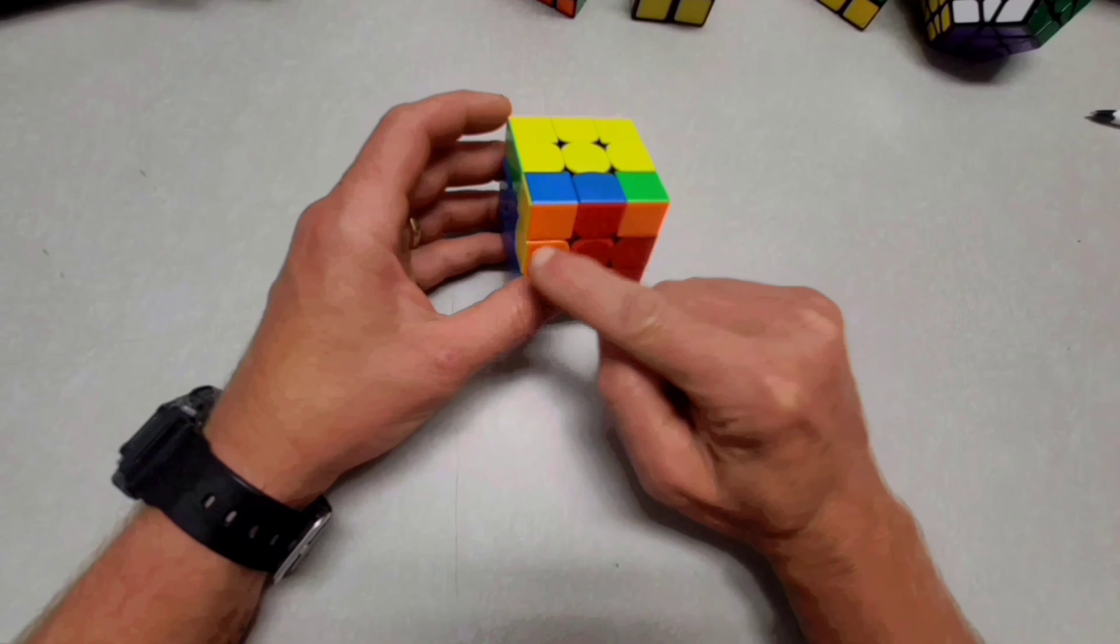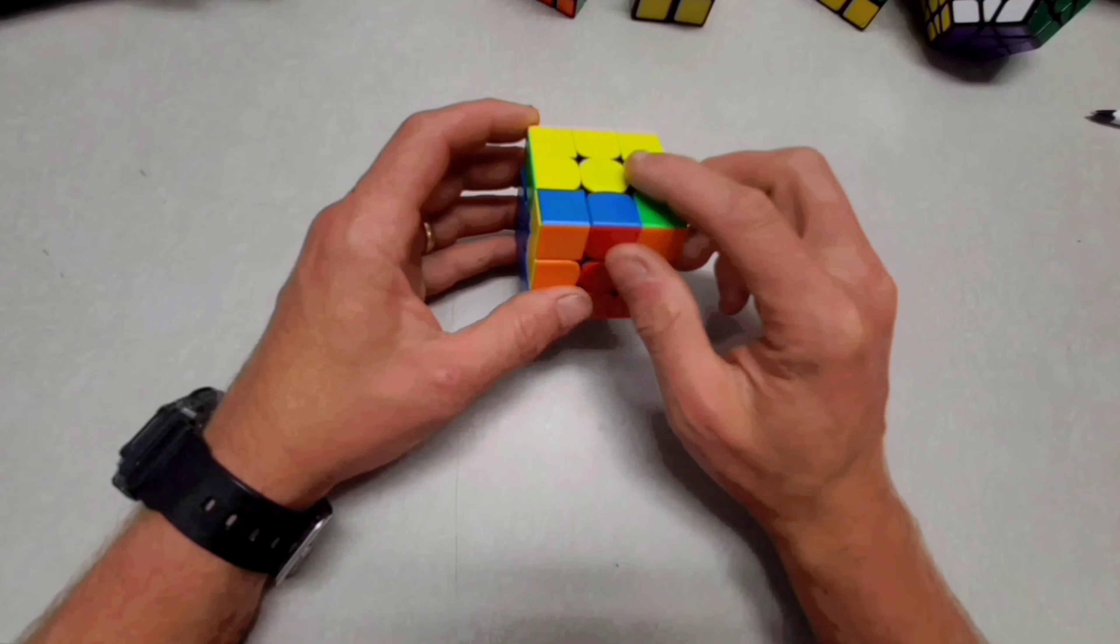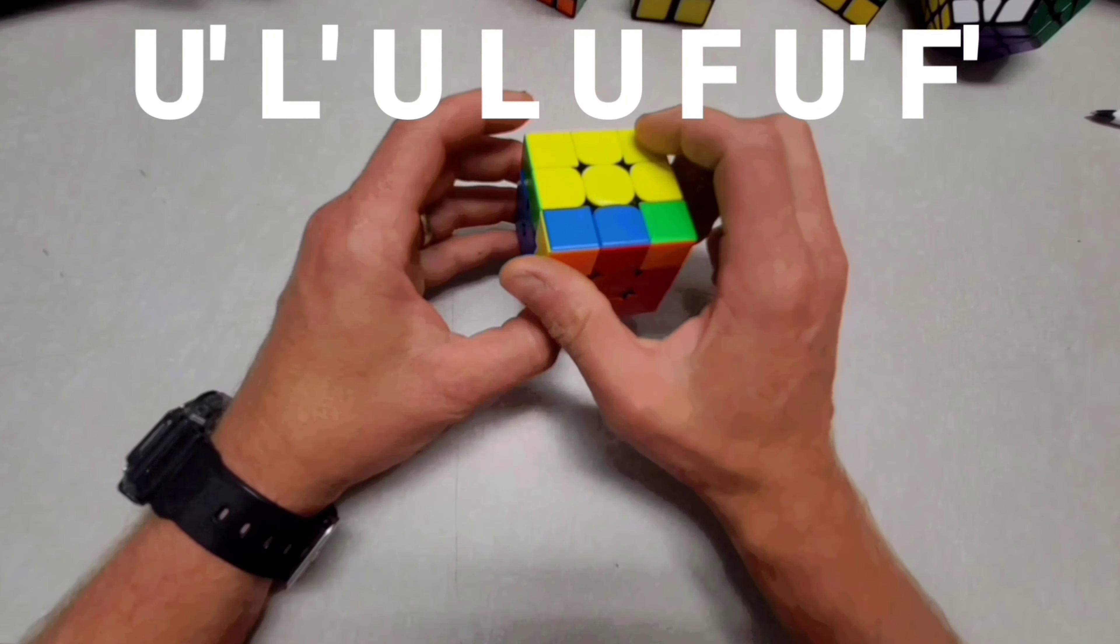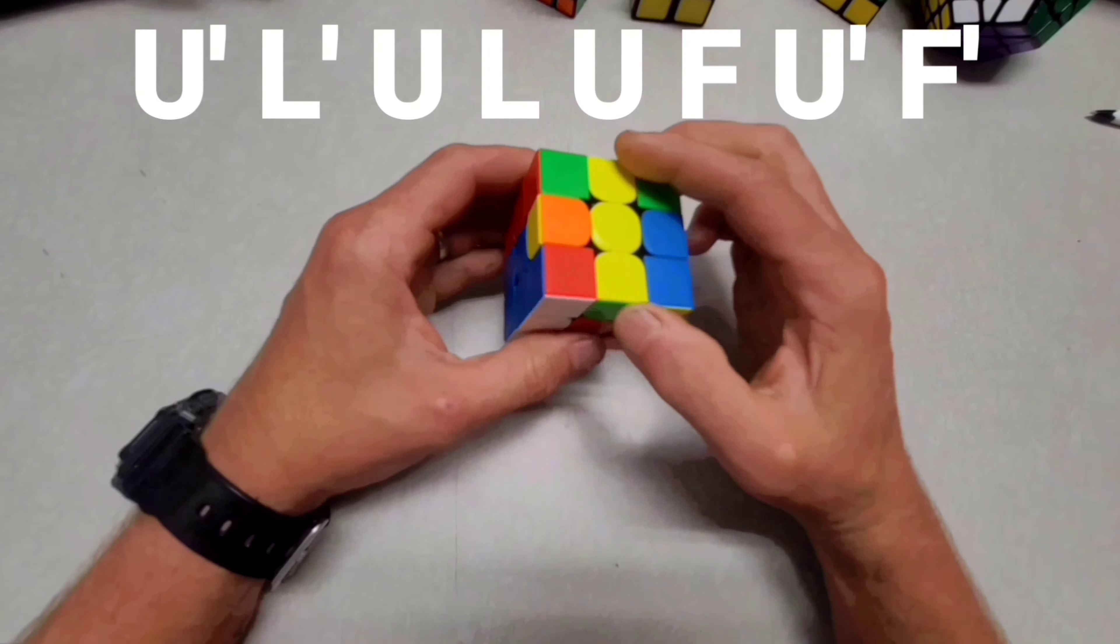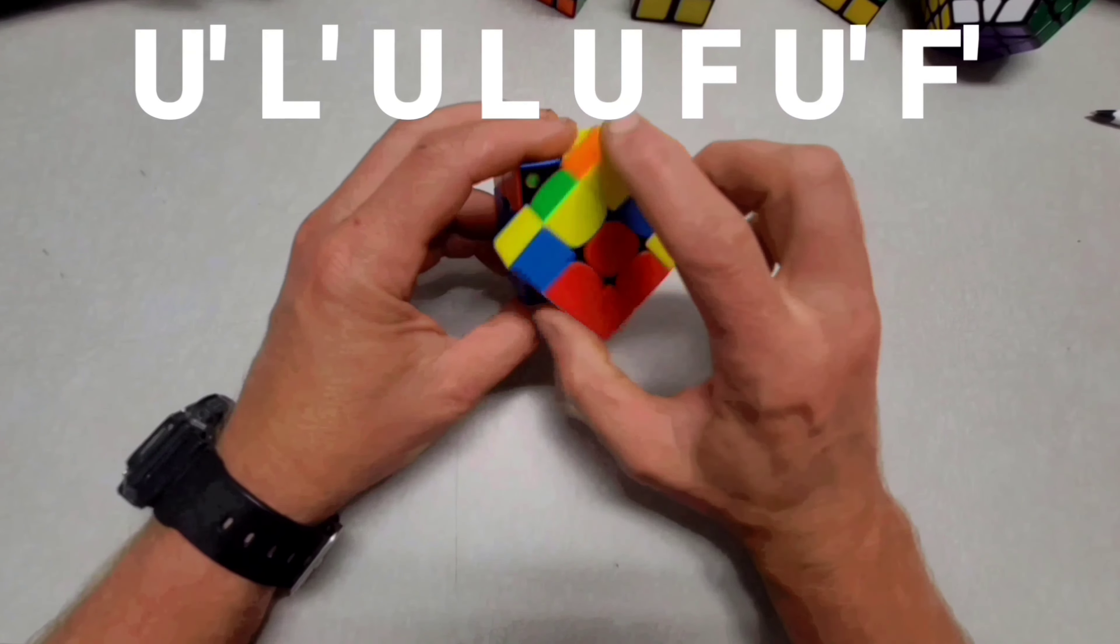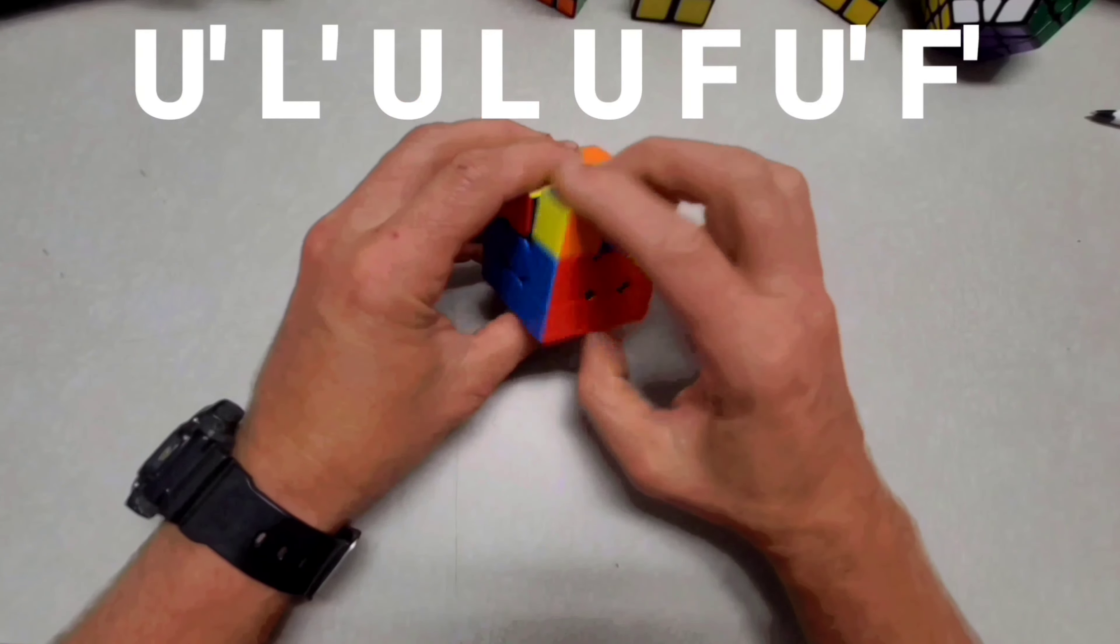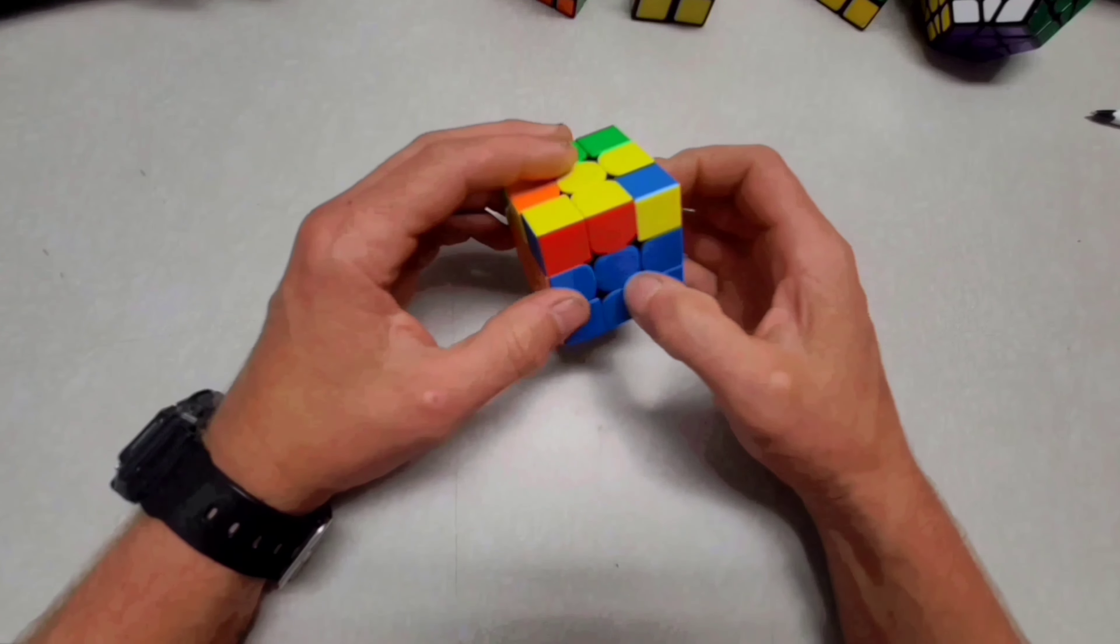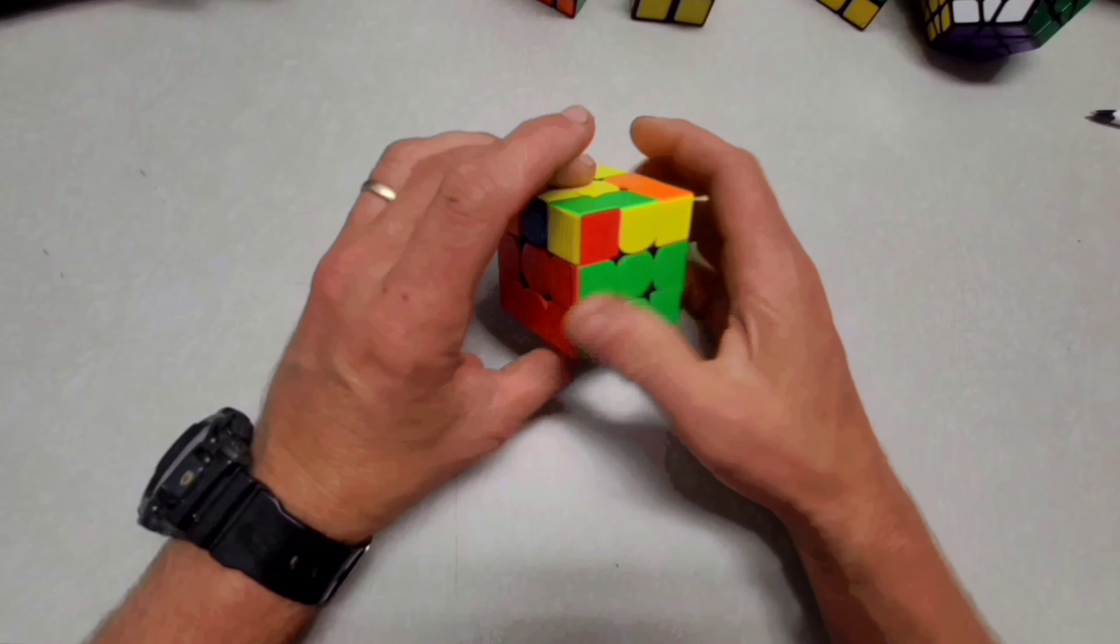For example, this piece goes here. So that is a left-sided algorithm again. So U prime, left prime, U, L, U, F, U prime, F prime. Okay. So now I've got the whole second layer done. See?